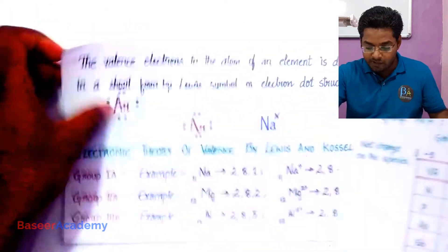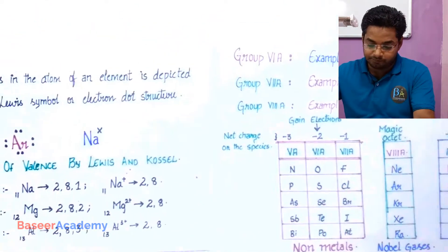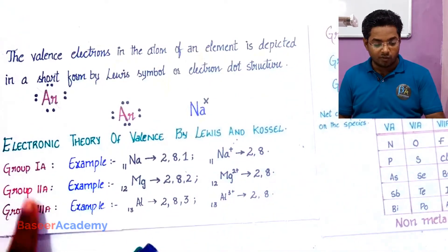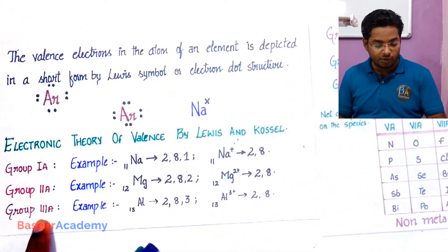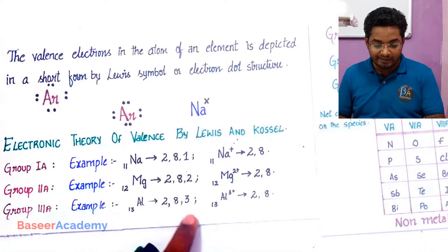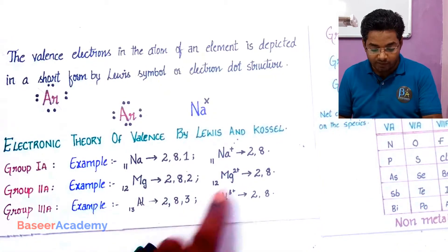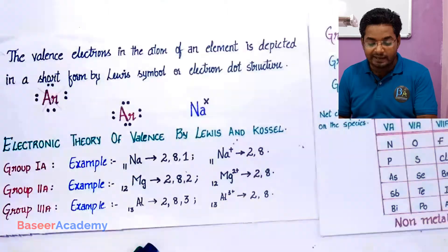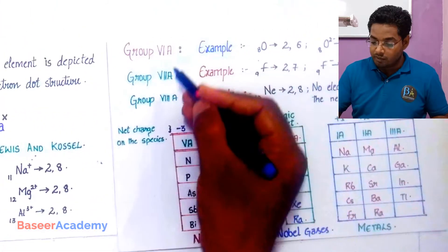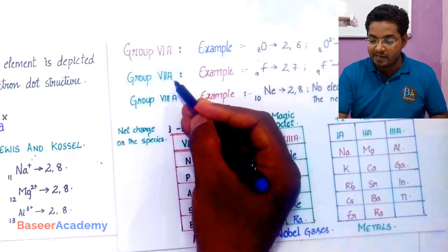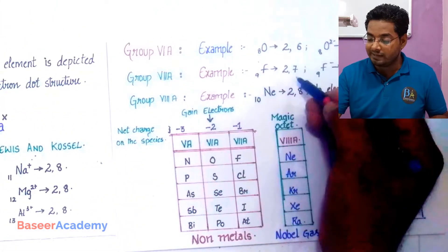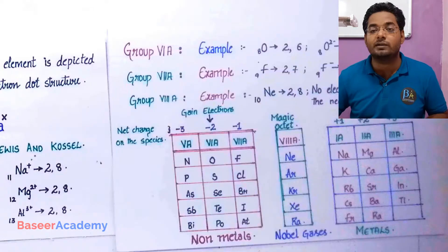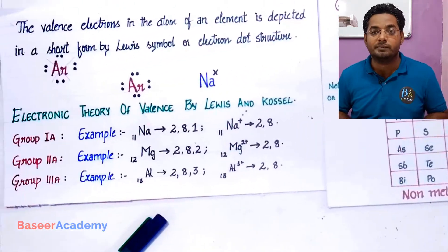From these charts we see that group 1A, 2A, and 3A elements tend to lose electrons so that they are left with eight electrons in the outermost orbit. Group 6A and 7A elements tend to gain electrons so that they are left with eight electrons in the outermost orbit.